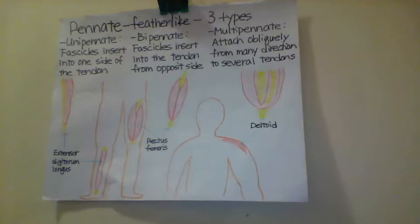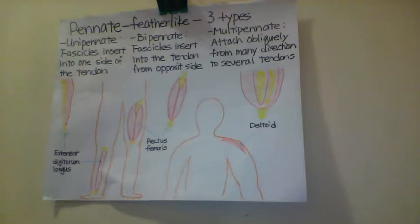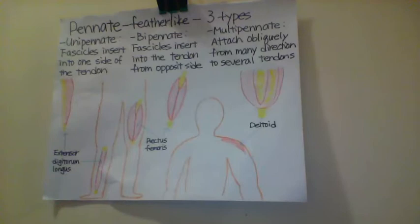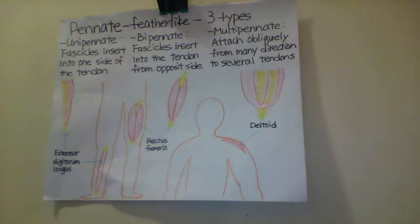Pennate muscles. Pennate muscle means feather-like muscle. There are three subtypes of pennate muscles. The first is unipennate muscle, where the fascicles are located on one side of the tendon. The extensor digitorum longus of the lower leg is an example of the unipennate muscle.